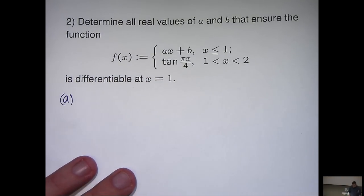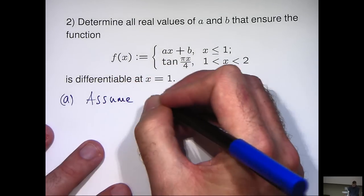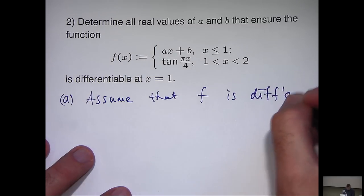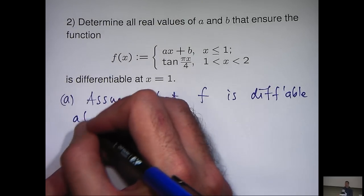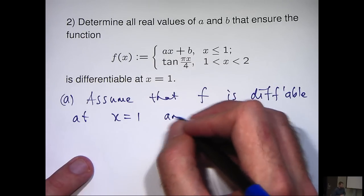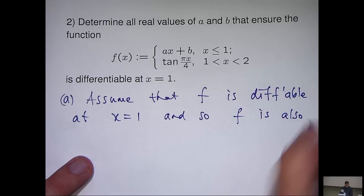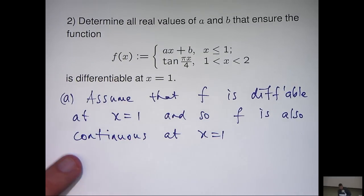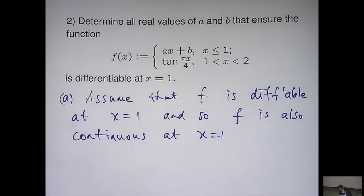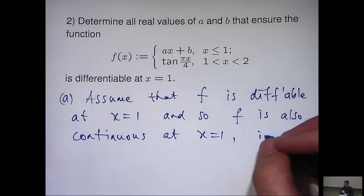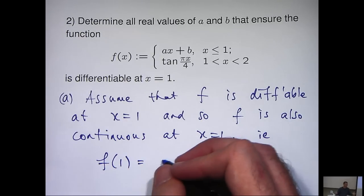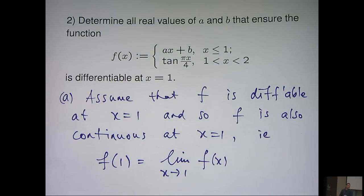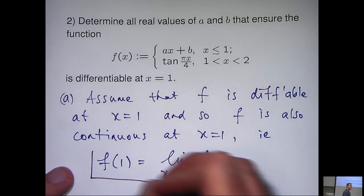The first part actually involves continuity because we know that a differentiable function must be continuous. So let's assume that our function is differentiable at x equals 1 and so f is also continuous at x equals 1. Let's think back to the limit condition or the limit definition of continuity. Basically the value of the function at x equals 1 has to equal the limit of the function as x approaches 1.